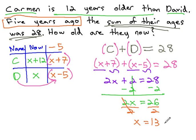We now have x is 13, and if we look at our table, we see x represents D, or David's age now to be 13. To find Carmen's age, we look at our now table and see Carmen now is x plus 12. Replacing the x with 13, 13 plus 12 tells us that Carmen's age is 25.